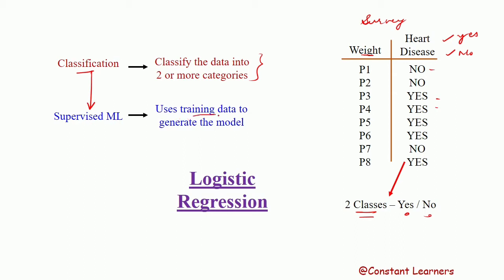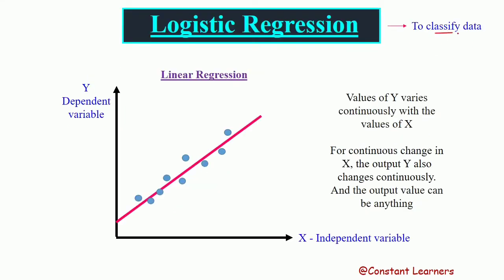Classification is a type of supervised machine learning. Supervised machine learning uses training data to generate the model — all of this we've already discussed in the previous videos. So logistic regression is a type of supervised machine learning used to solve classification problems. Logistic regression belongs to the classification type in supervised machine learning, and it is used to classify data into two or more classes or categories.